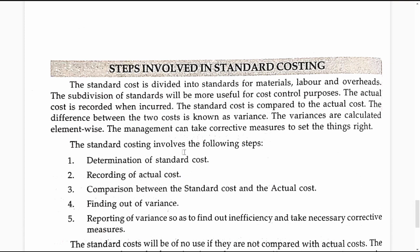Steps involved in standard costing is the next topic. The standard cost is divided into standards for materials, labour and overheads. The subdivision of standards will be more useful for cost control purposes. The actual cost is recorded whenever they are incurred. The standard cost is compared with actual cost on various elements of the activities, and the difference between the two costs is known as variance.